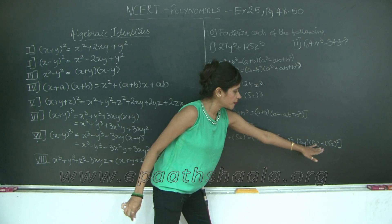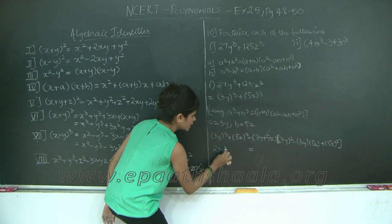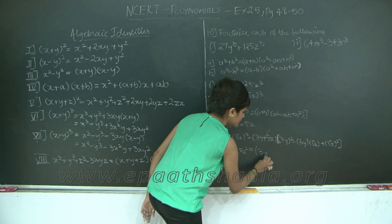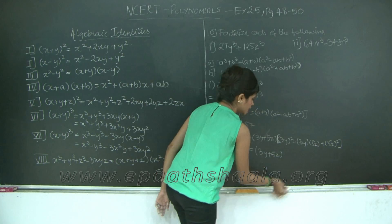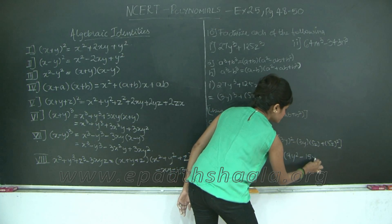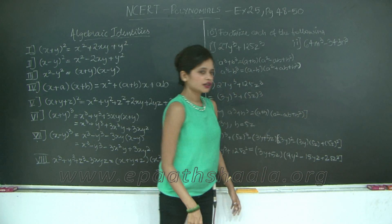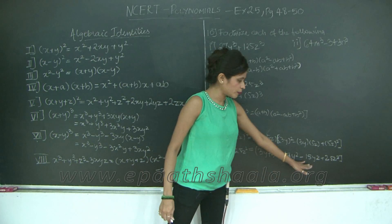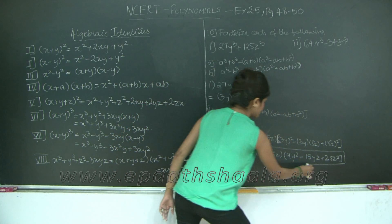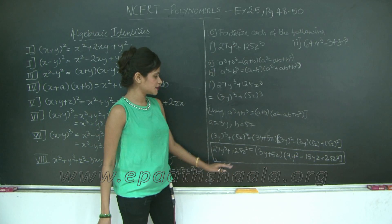Let us further open these brackets. This gives us 27y cube plus 125z cube is equal to 3y plus 5z into 9y square minus 15yz plus 25z square. You do not have to expand this bracket further because this is the answer. So, I have factorized the expression 27y cube plus 125z cube into the product of its factors.